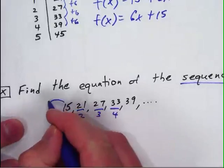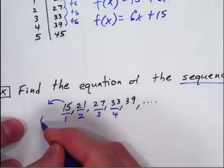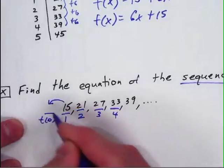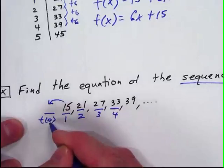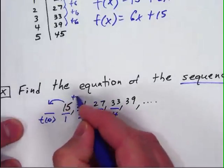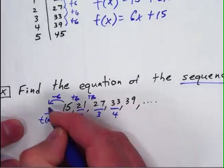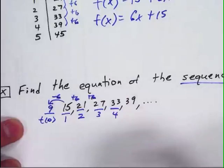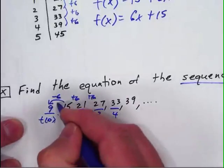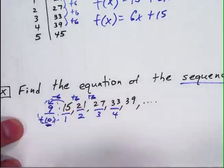In order to write the equation, we have to actually go back to what we would consider to be t of 0, or the initial value at term 0. And in this case, I can tell that these are adding 6 every time. So what I'm going to do is I'm going to subtract 6, make that calculation of that being a 9, would be the number before the sequence actually starts, making it the t of 0.